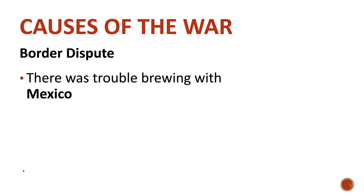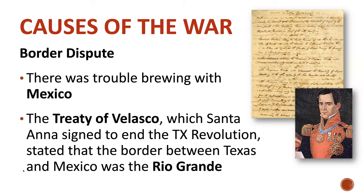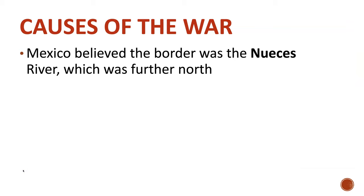The Treaty of Velasco, which Santa Ana signed to end the Texas Revolution — he was captured, imprisoned, and forced to sign it — stated that the border between Texas and Mexico was the Rio Grande. But the problem is Mexico never acknowledged that treaty. They said Santa Ana had been forced to sign it, that they never recognized Texas as an independent nation, and they certainly did not recognize the Rio Grande as the border. Instead, Mexico believed the border was the Nueces River, which was farther north.